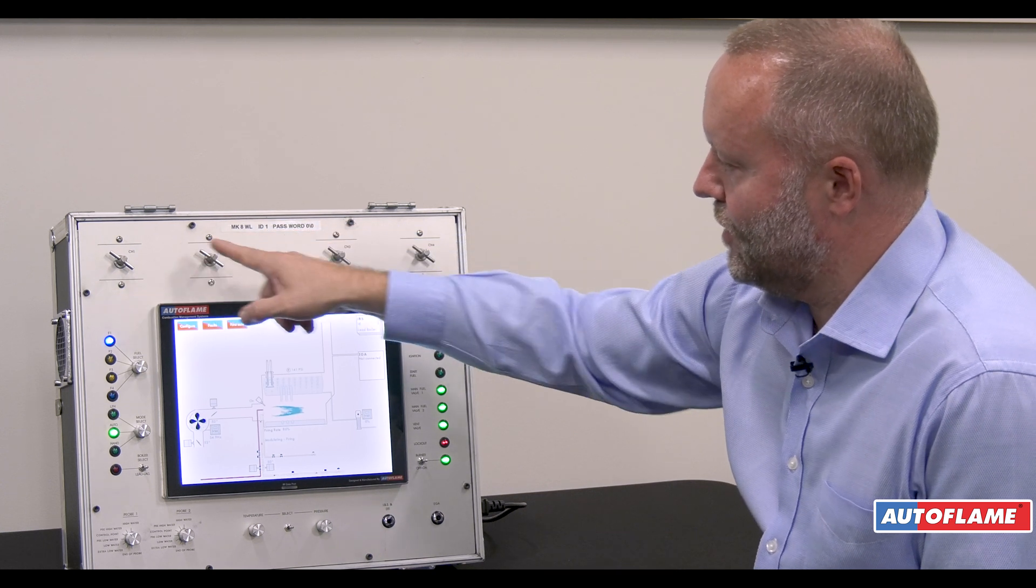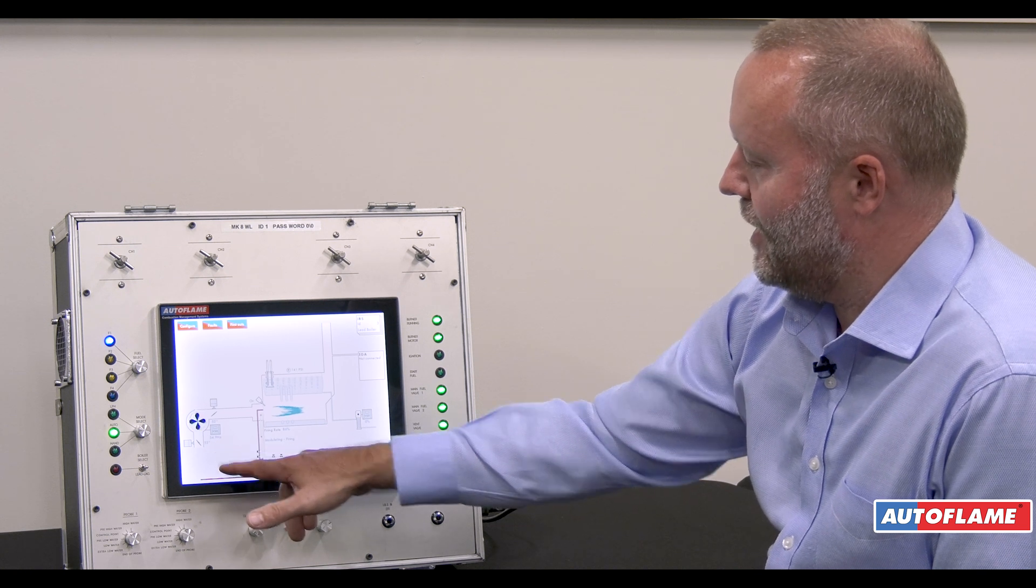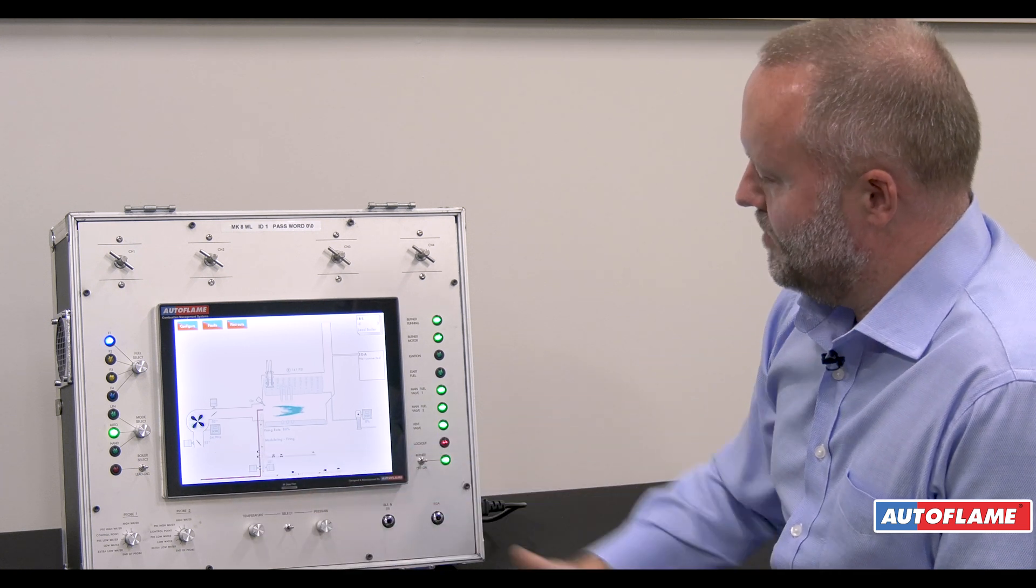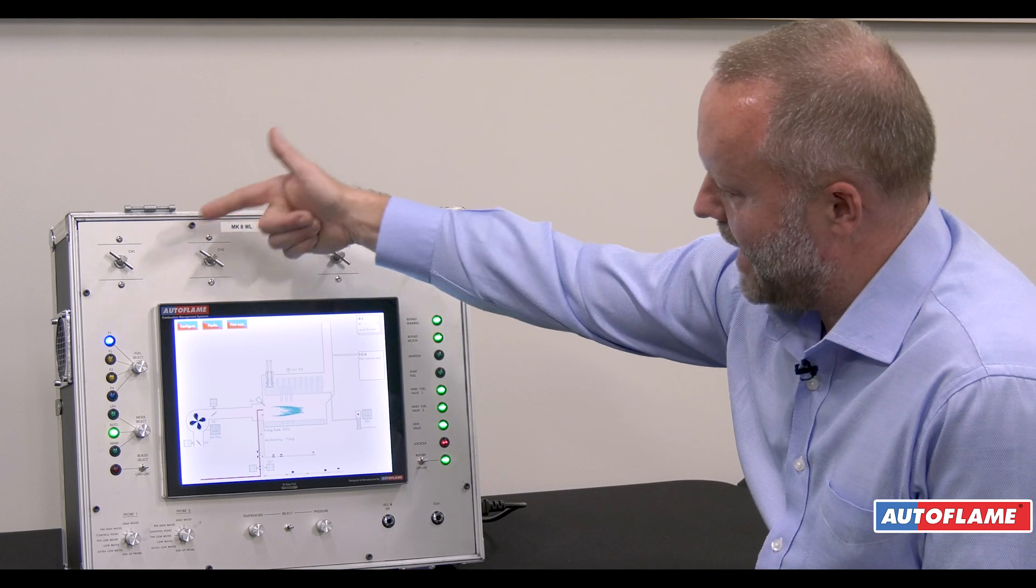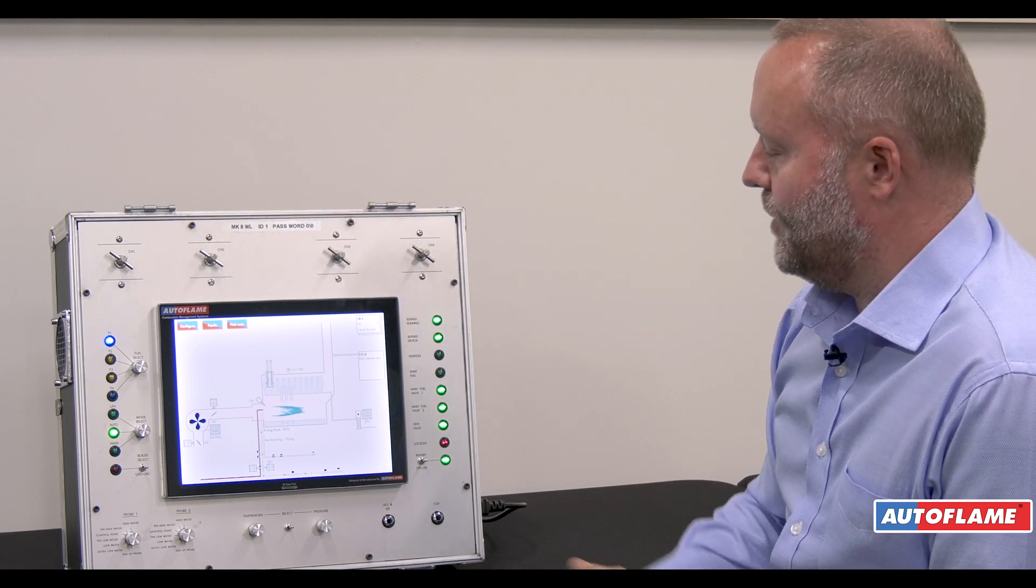So we'd commission the fuel air ratio based on the volume or mass flow of air and fuel, but if they failed we'd revert back to the normal parallel positioning control, meaning we have a full backup.